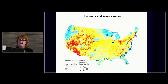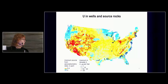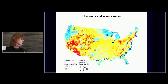This is the AeroRAD data, and it's part of the puzzle here — showing very high concentrations of uranium in superficial rocks and sediments in the west.